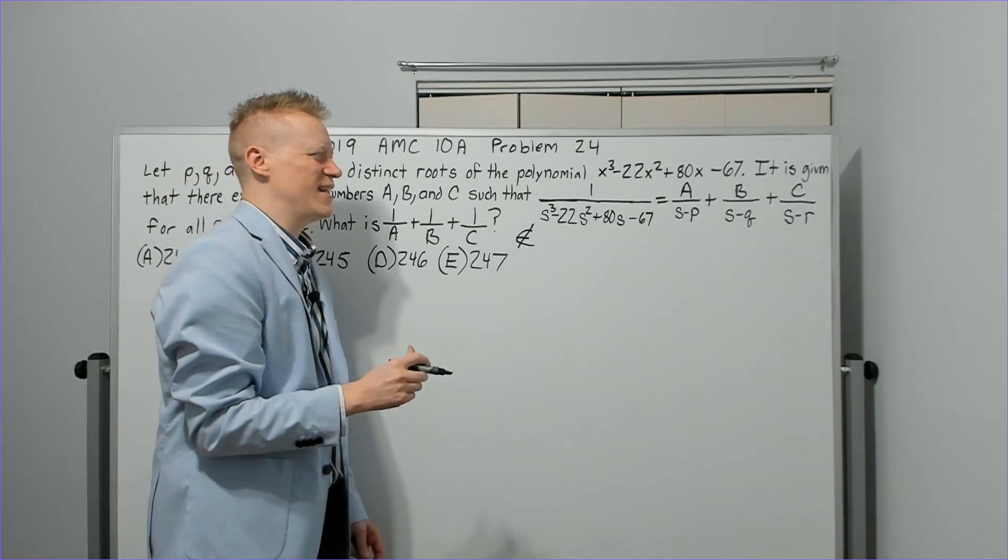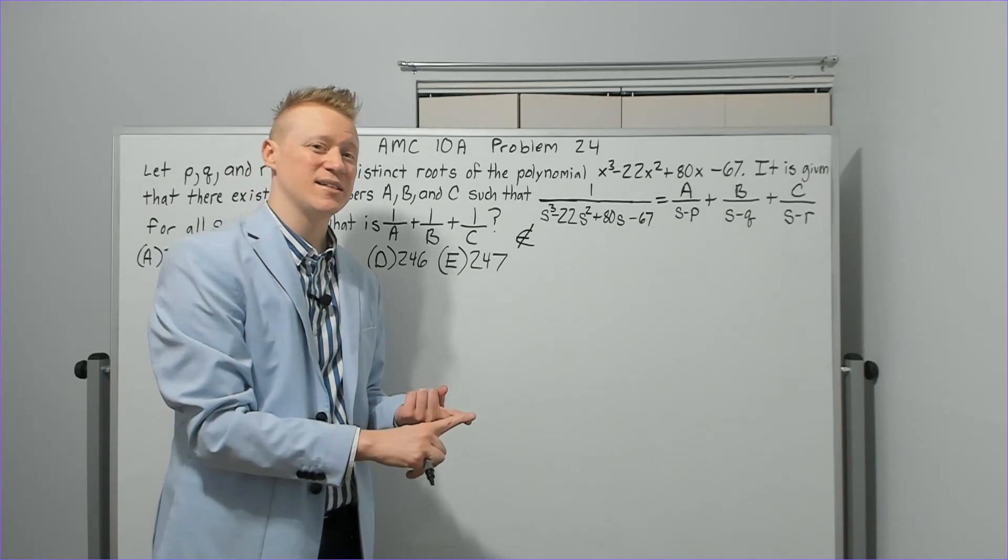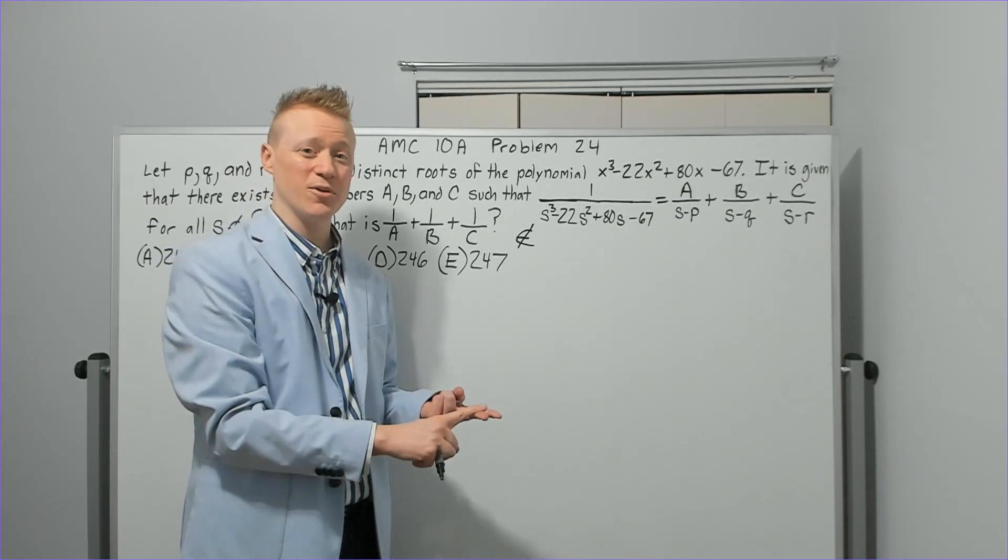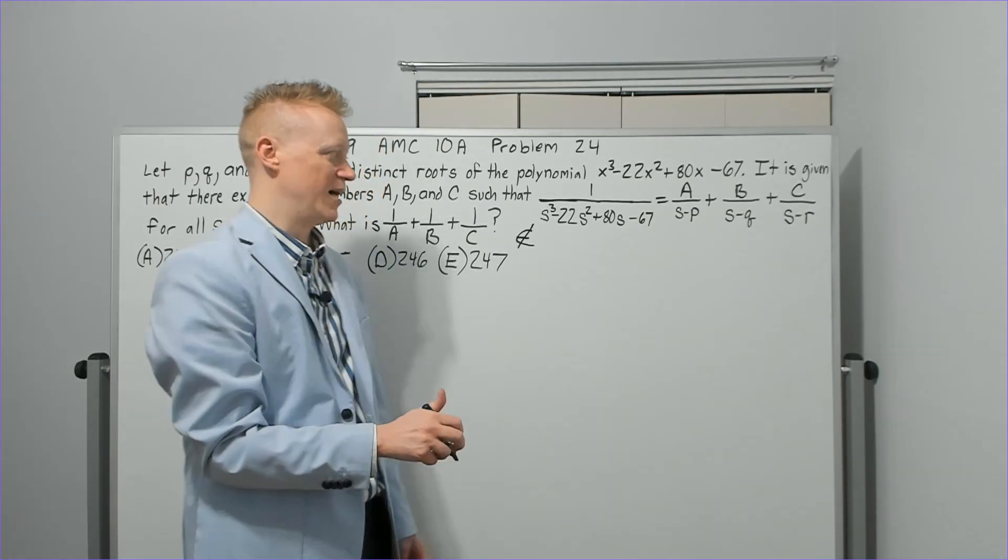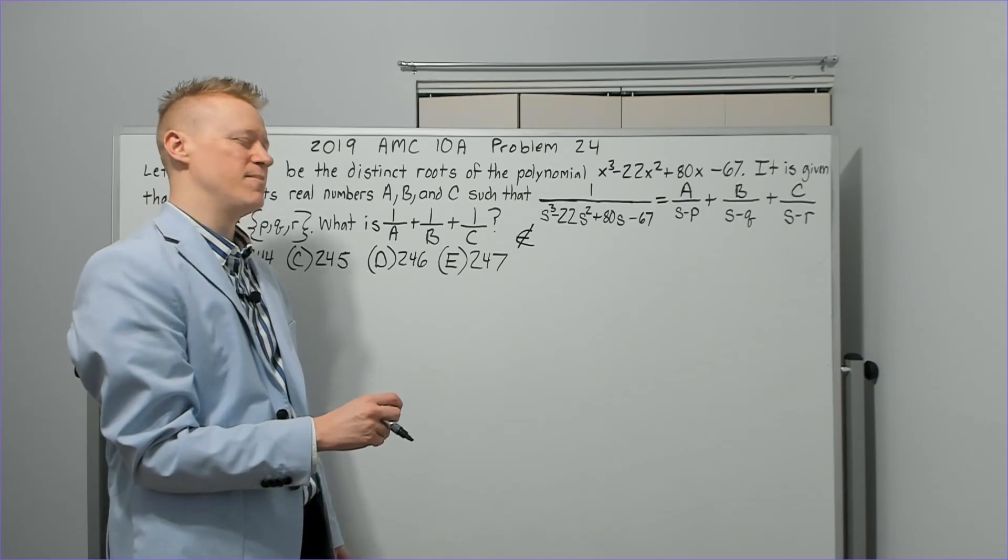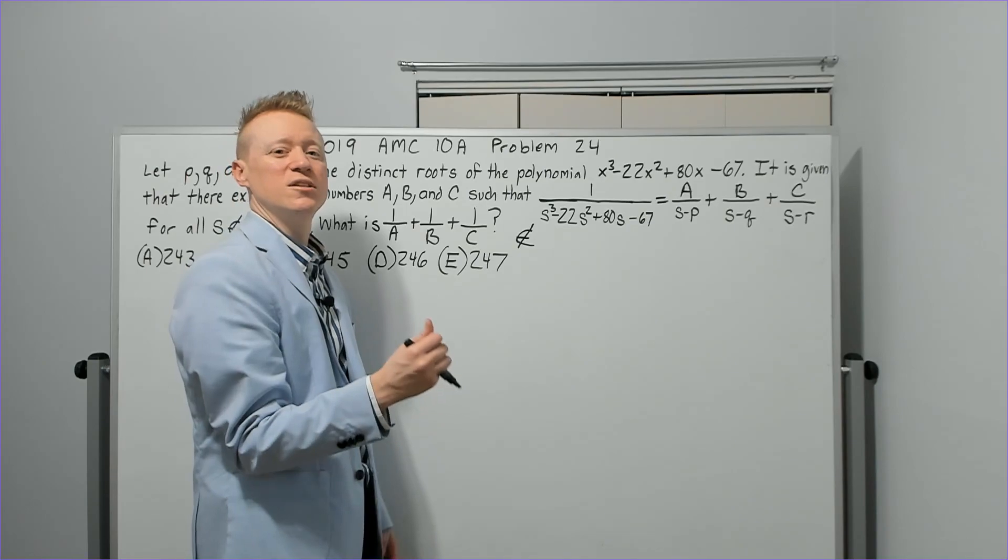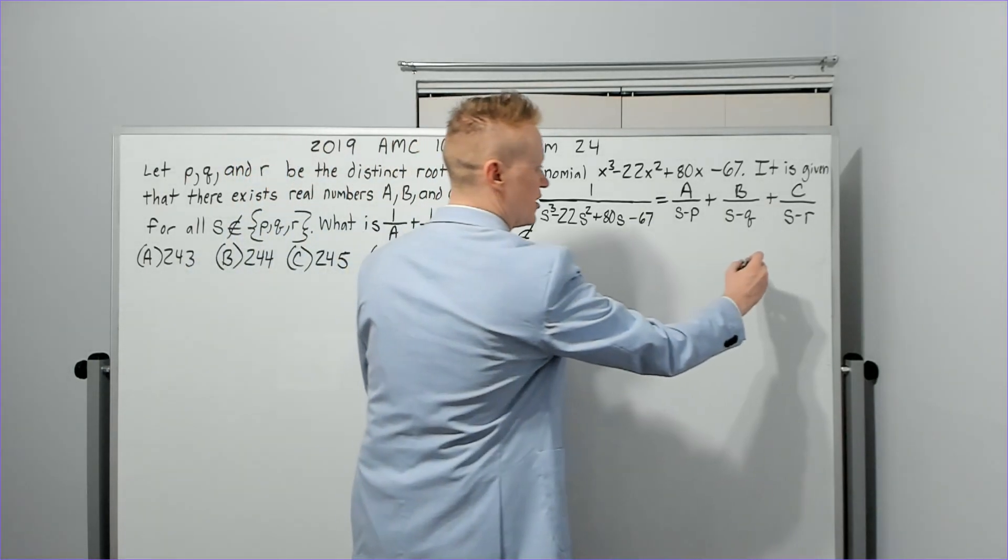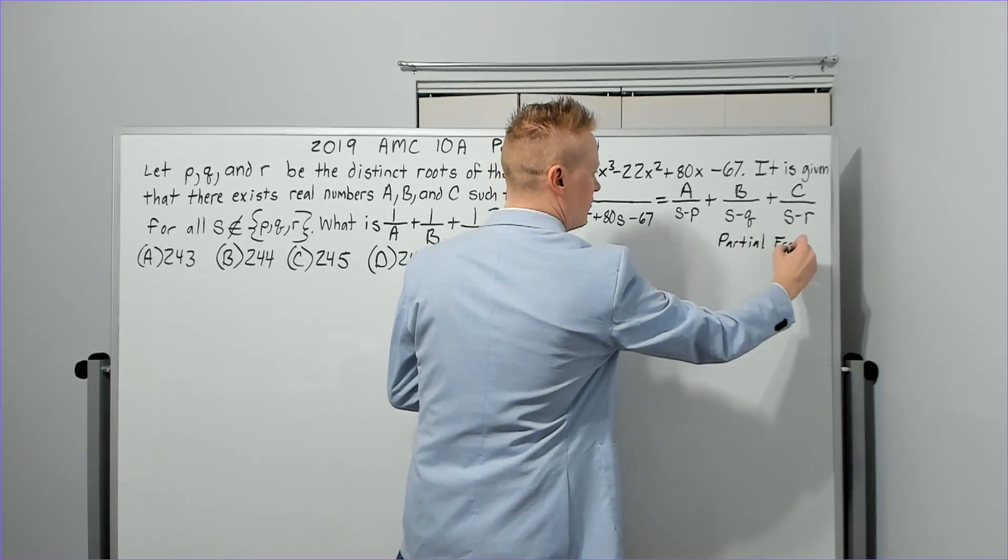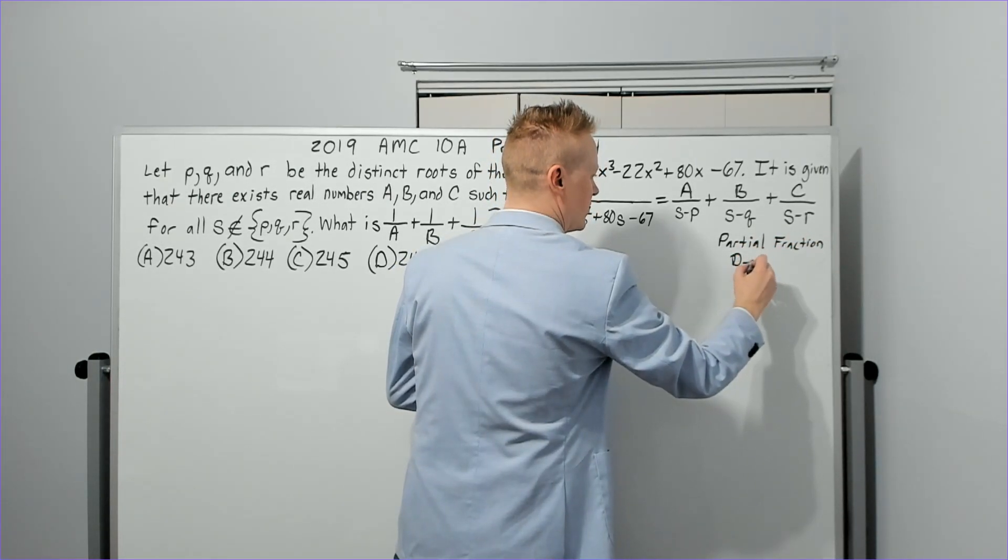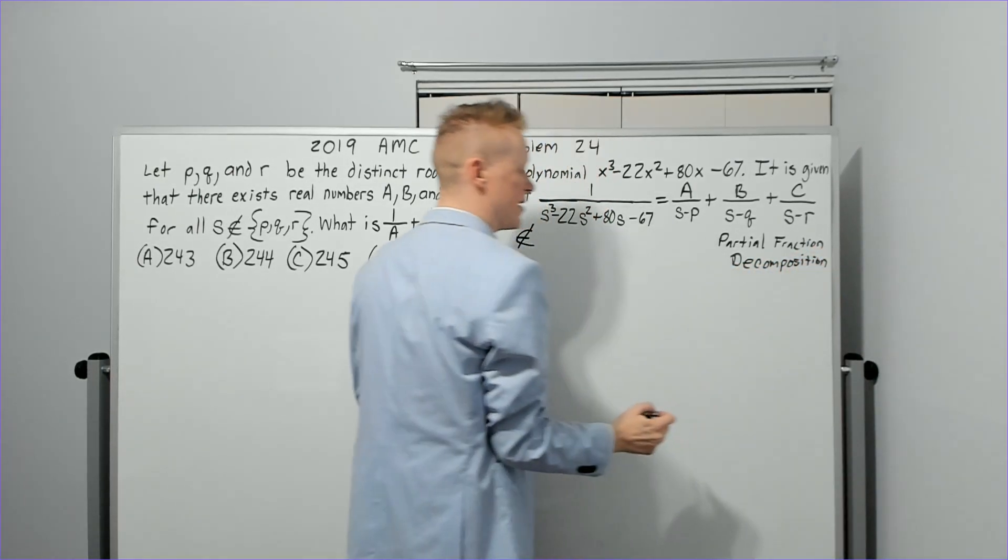So the first thing is this looks an awful lot like something you will either encounter possibly in the Honors Algebra 2 course, possibly in a Pre-Calc Honors course, or even just regular, and definitely in a Calculus course at some point. Usually, I think B, C would have it before A, B, but I'm not 100% sure on that. So what is it called? It's called Partial Fraction Decomposition.